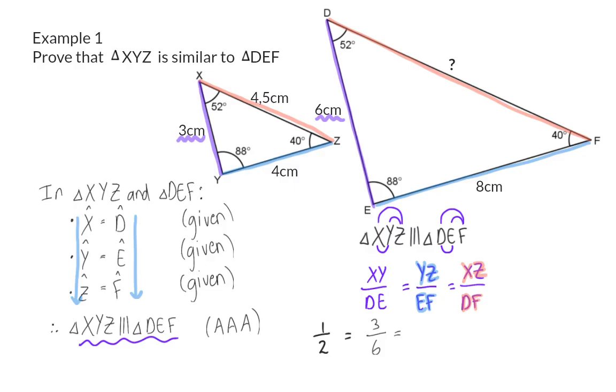Similarly, side YZ's 4 is doubled to get side EF's 8. And then they've given us that XZ is 4 and a half, but this time they don't give us the length of DF.